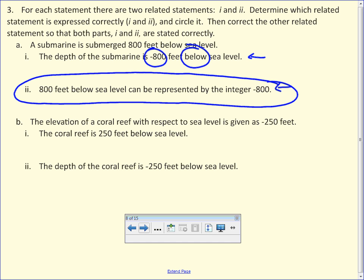So, for B, the elevation of a coral reef with respect to sea level is given as negative 250 feet. So, the coral reef is 250 feet below sea level, or the depth of the coral reef is negative 250 feet below sea level. Everybody? Statement I. Because, you said that already. Enough. Stop repeating yourself. So, the correct answer is I. Because, I am always right.